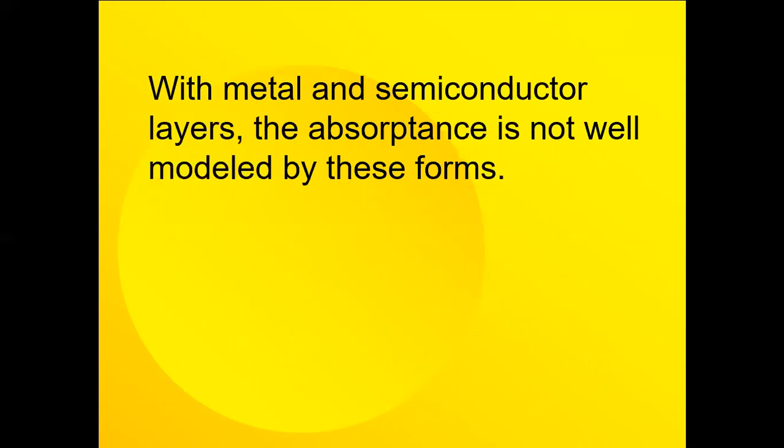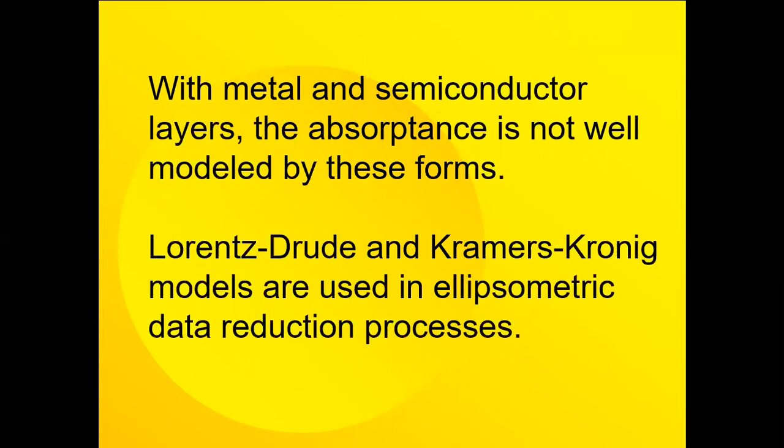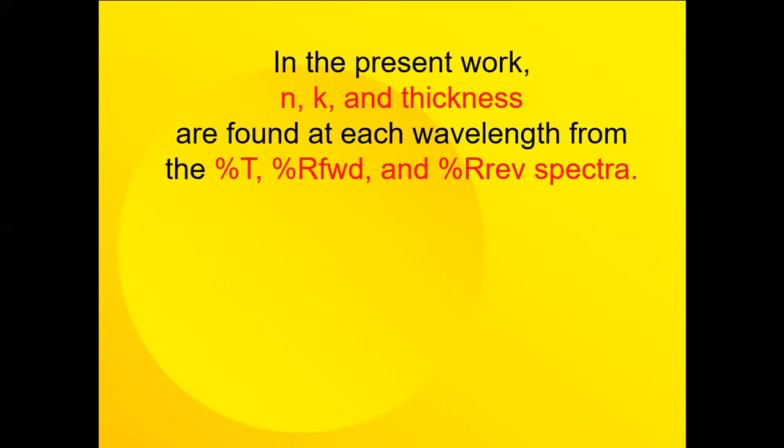When metals and semiconductor layers are deposited, the absorbance is not well modeled by these forms or formulas. The Lorentz oscillator and the Kramers-Kronig models are used in ellipsometric data reduction processes. In the present work, we're going to derive the N and K and thickness from the spectral data at each wavelength from the percent T, percent R forward, and the percent R reverse spectra.